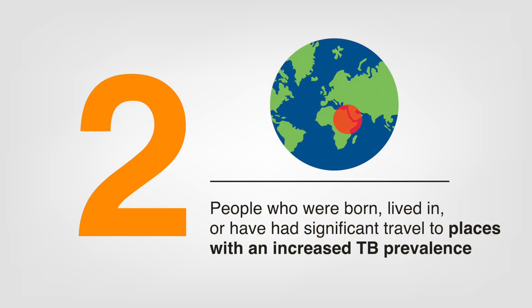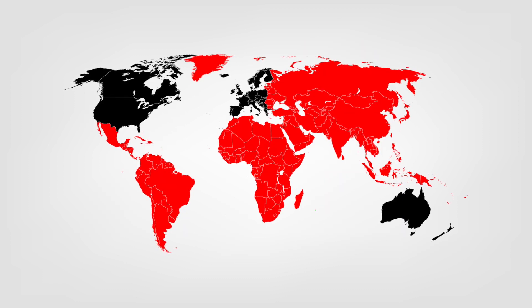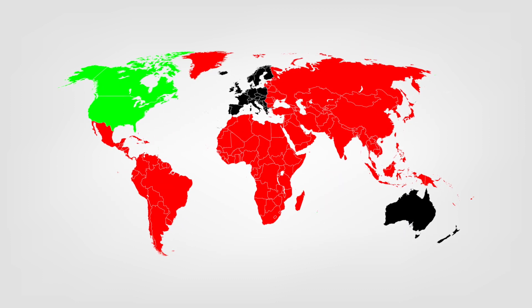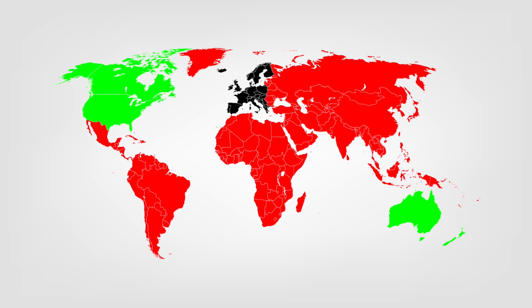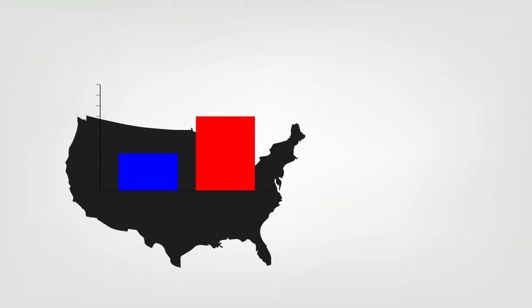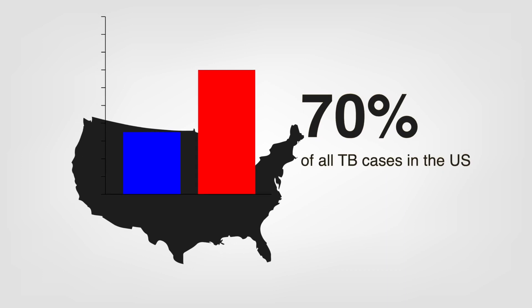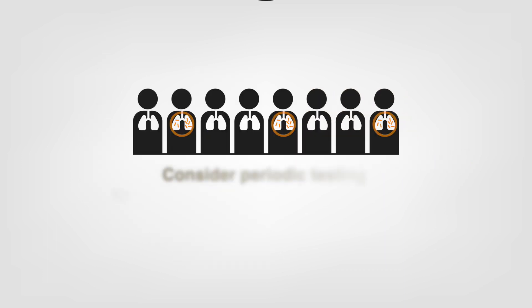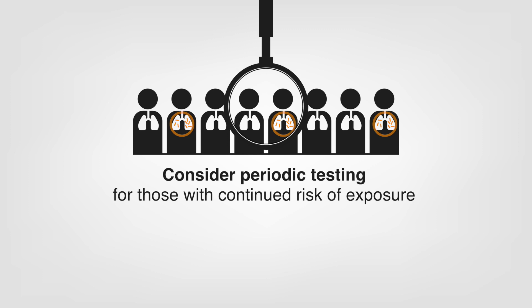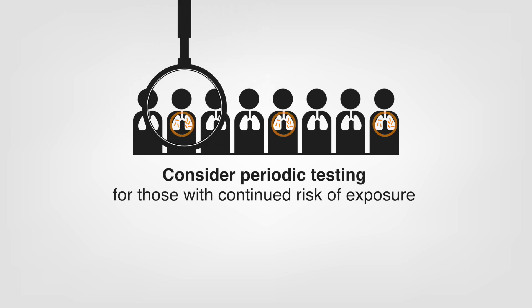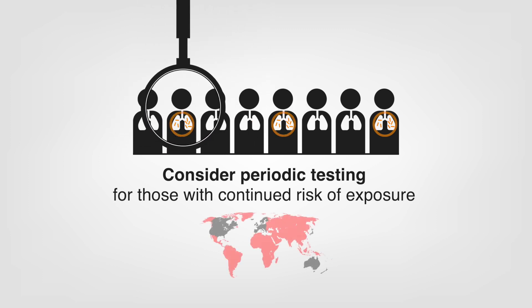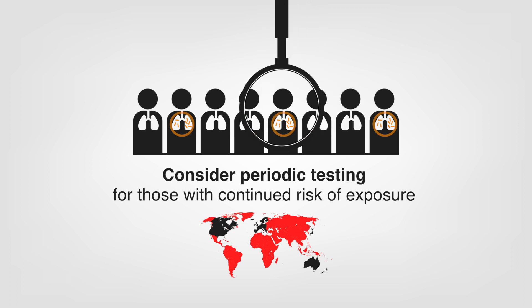Second, people who were born, lived in, or have had significant travel to places with an increased TB prevalence are at increased risk for acquiring TB infection. This includes countries other than the US, Canada, Australia, New Zealand, or Northern or Western Europe. Non-US-born persons account for 70% of all TB cases in the US. Test these individuals for TB infection and consider periodic testing for those with continued risk of exposure, such as travel to countries with an increased TB prevalence.